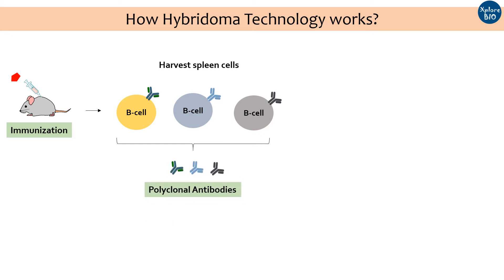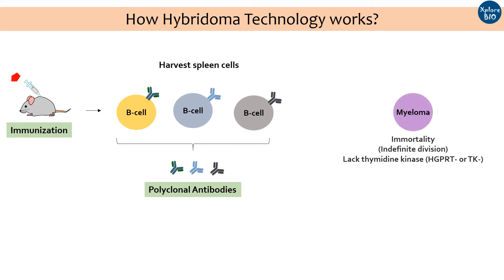If the aim is to get polyclonal antibodies, one can obtain them at this step. We can also select a particular type of B cell to get monoclonal antibodies, which I will explain in a moment. Myeloma cells are modified tumor cells that lack thymidine kinase or hypoxanthine-guanine phosphoribosyl transferase. Myeloma cells are immortal — they will grow indefinitely in a culture medium.